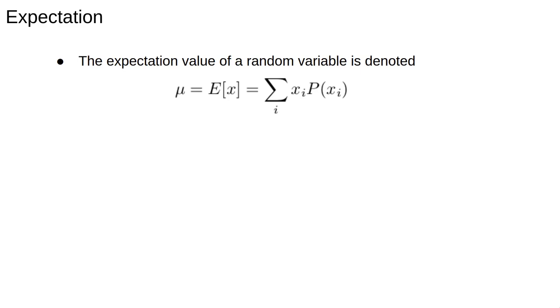For the expectation of the random variable itself we often use the special symbol mu. In general though the notation E with the square brackets means to take whatever is inside the square brackets and do a summation over it weighing by the probability.